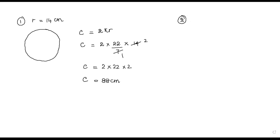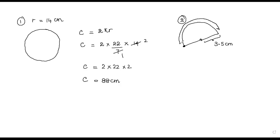Now we move to the second question. The second question has a half circle. You want to be mindful because here we are finding the perimeter — that means we are finding the outer boundary. The radius value given is 3.5. To find the perimeter, you start from one corner and first go along this curvy path. That is step one. Thereafter you come from this corner along the straight side. That is step two.